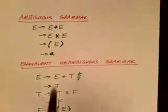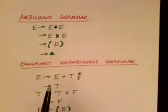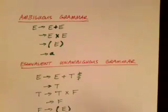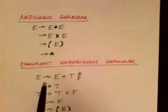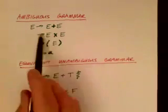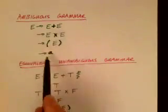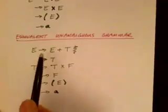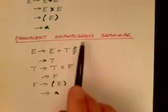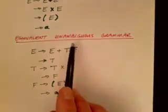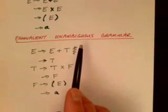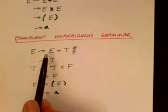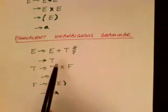Just because the grammar is ambiguous doesn't mean that there's not an equivalent unambiguous grammar that describes the same language. This example shows that — here is our ambiguous grammar from before, and here is another grammar. I will just tell you that it is equivalent, meaning it generates the same language. And furthermore, it is unambiguous.